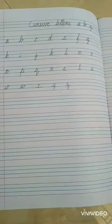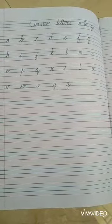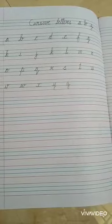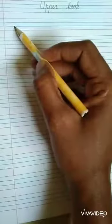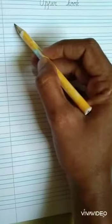Before we start the cursive letters, you have to know two important patterns. The first pattern is Upper Hook. Today we are going to learn how to write Upper Hook. Upper Hook should start and end in the centre of the blue line.